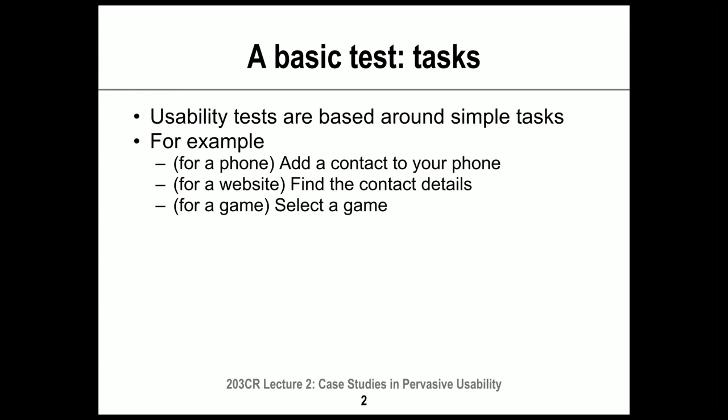Let's say we were going to do a usability study of a game — Xbox possibly — and we would ask our users from a front screen to select a particular game that we defined in advance. Usability testing of technology is based around tasks, and usually the task we choose is an important and central one. One of the big lessons is we can't test everything, so we just go for the really important things.